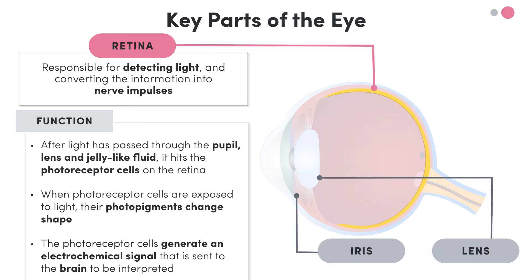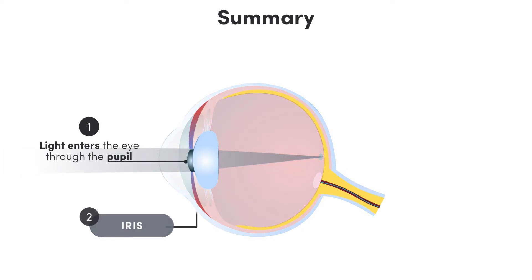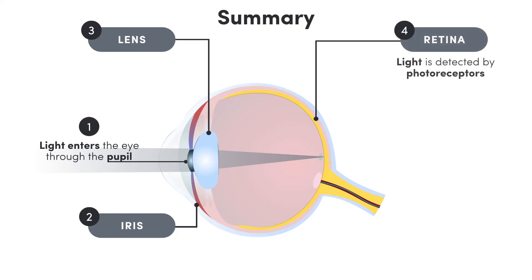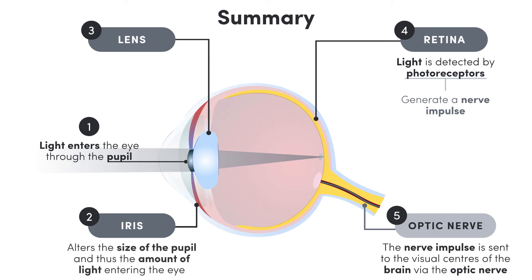Now we've got a decent understanding of how the eye works, let's quickly recap. Light enters the eye through the pupil, passes through the lens and the jelly-like fluid inside the eye, and is detected by photoreceptors on the retina. The photoreceptors convert this information into a nerve impulse, which is sent to the visual centres of the brain via the optic nerve. In the brain, these messages are interpreted as images. The eye manages light at different intensities by adjusting the contraction of the iris, which alters the size of the pupil and thus the amount of light entering the eye.